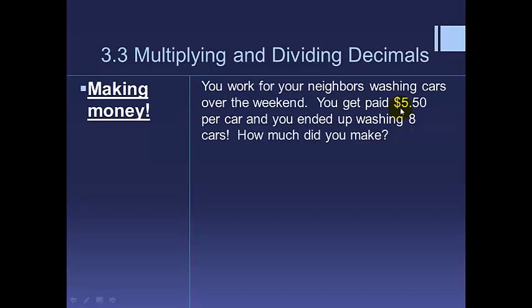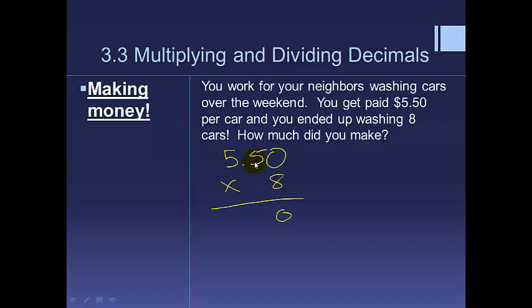Let's see how we would multiply that. Most of you probably already know this, but I'm showing one example before we get into negatives. So 5.50 — I'll keep the zero since it's in the problem. 8 times 0 is 0, 8 times 5 is 40, 8 times 5 is 40 plus 4 is 44.